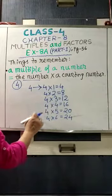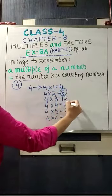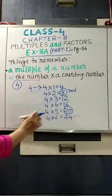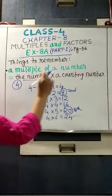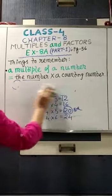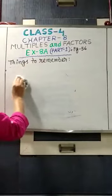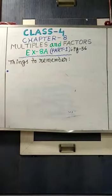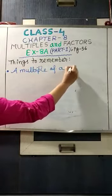If it is said, what are the second and fifth multiples of 4? The second multiple is 4 into 2, which is 8. The fifth multiple is 4 into 5, which is 20. In this way you have to find out the multiples of a number.